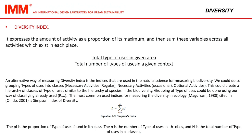The diversity index expresses the amount of activity as a proportion of its maximum, then sums these variables across all activities which exist in each place. An alternative way of measuring the diversity index uses indices from the natural sciences for measuring biodiversity, grouping types of uses into classes.